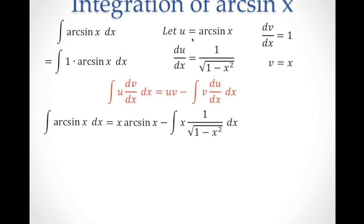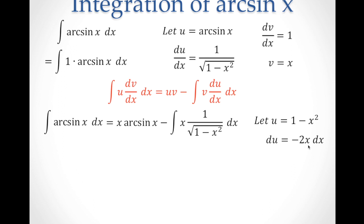Now we have all the information to plug into the integration by parts formula. So uv gives arc sine x times x, and then minus the integral of v, which is x, times du/dx. Now what we need to take care of is to integrate this, which looks more manageable. We are going to use integration by substitution, wherein we let u = 1 minus x squared, and then du = negative 2x dx.